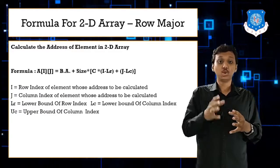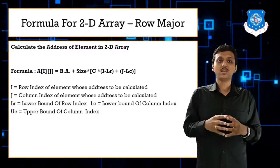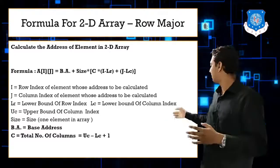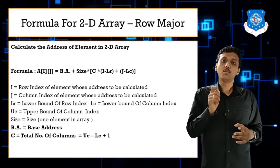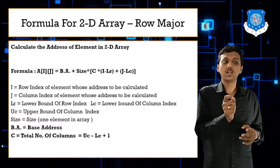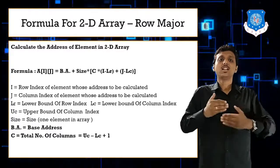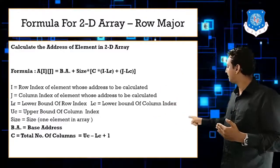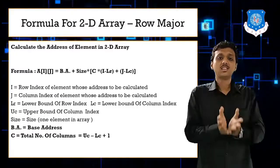UC stands for upper bound of column, and UR stands for upper bound of row. C, the total number of columns, is calculated as UC - LC + 1. This follows the same logic as for a single dimensional array where total number of elements R = U - L + 1. So total number of columns = UC - LC + 1.